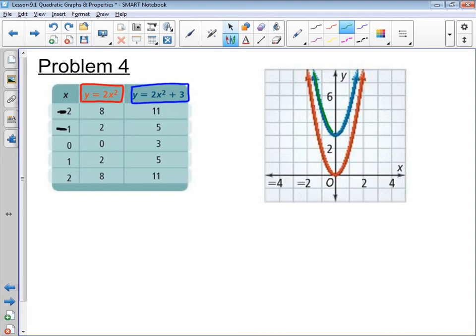And here's what you should notice. This blue parabola is the same shape as the red parabola. The only difference is that I've taken this shape, and I've moved it up three spaces. One, two, three. And that three comes from the three that I added to the end.